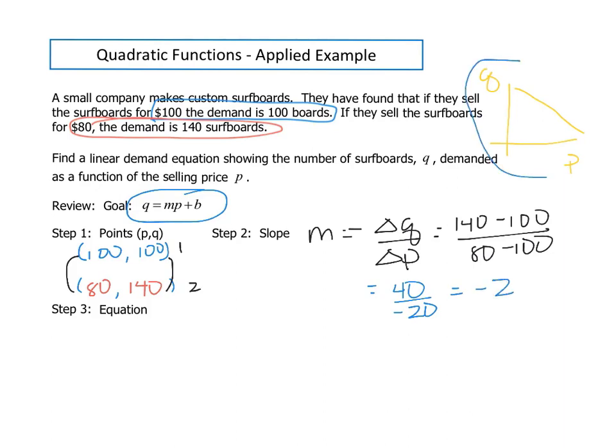And that matches what we're expecting from what we know about supply and demand. We should have a decreasing function with a negative slope, because as we raise the price, the demand is going to go down.